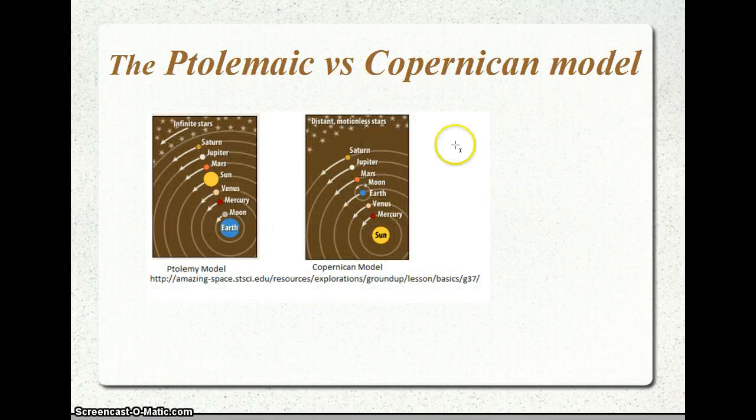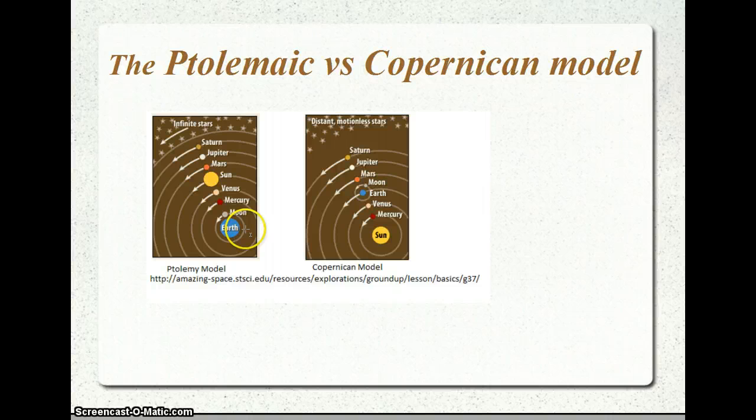Here we've got two side-by-side pictures, Earth being at the center in the first one in the Ptolemy model and the Copernican model over here. Basically, this would be practically impossible because in order for everything to orbit the Earth, we would have to be either much larger than we are or much denser than we are in order to be able to have this kind of gravitational pull to have everything being roped around us.